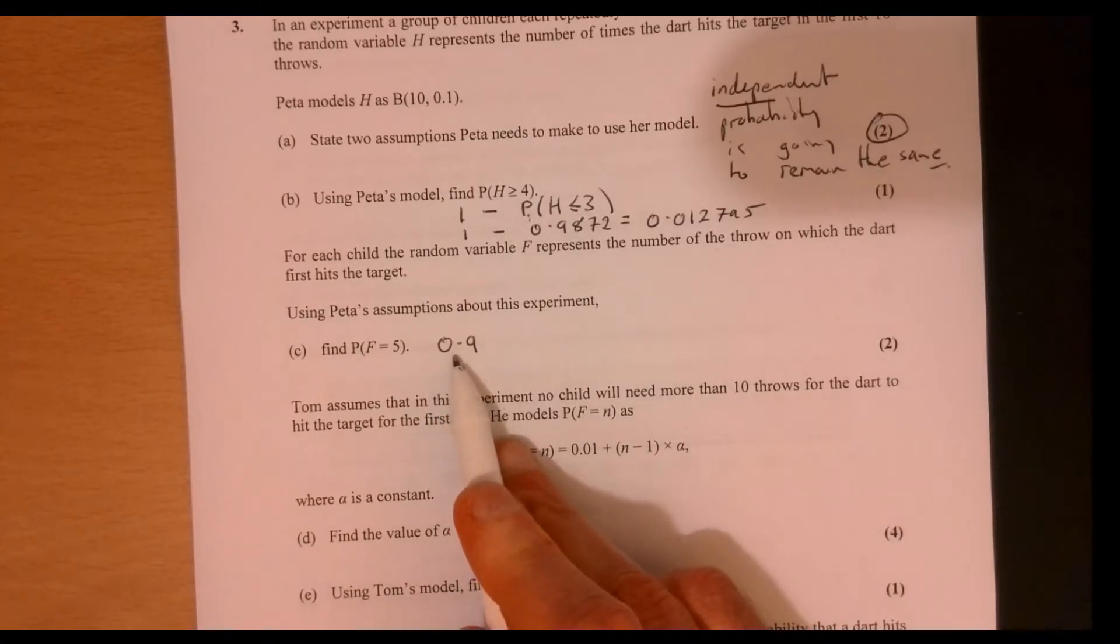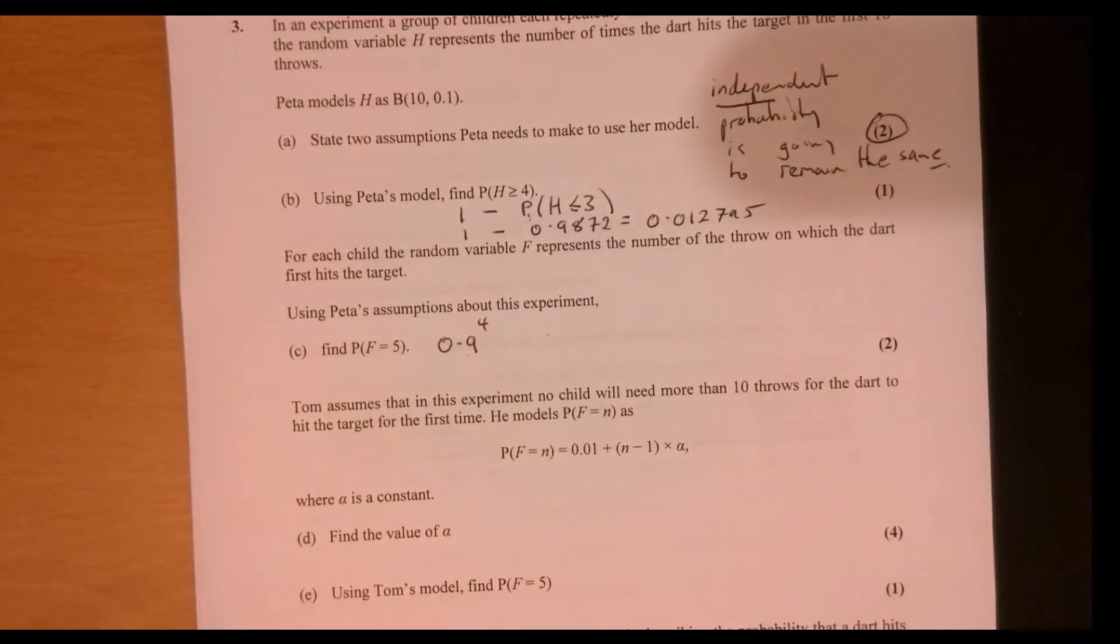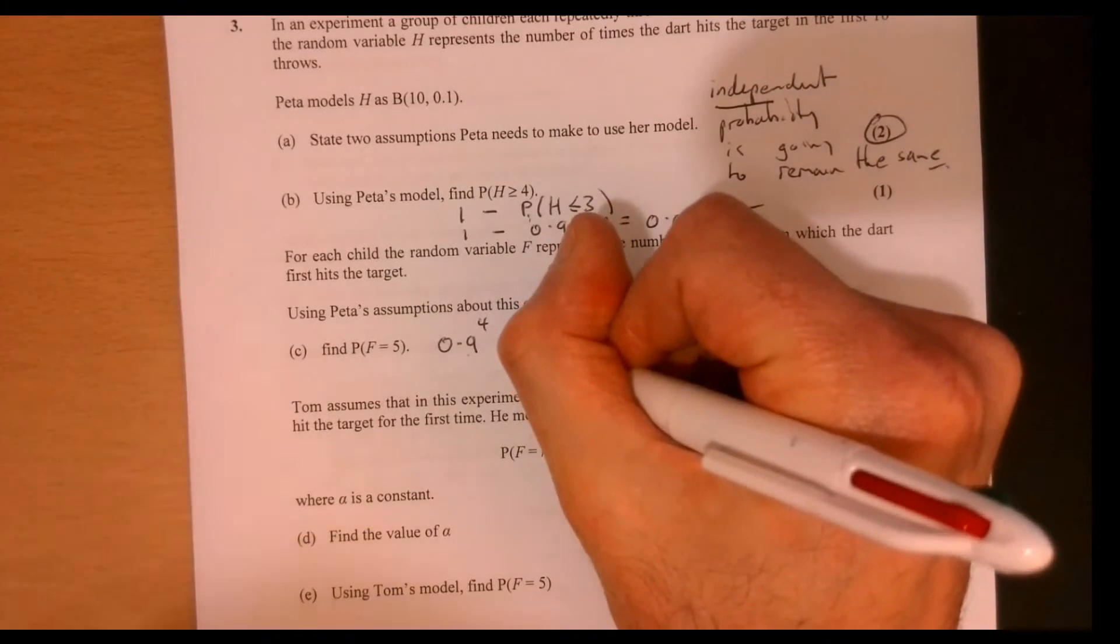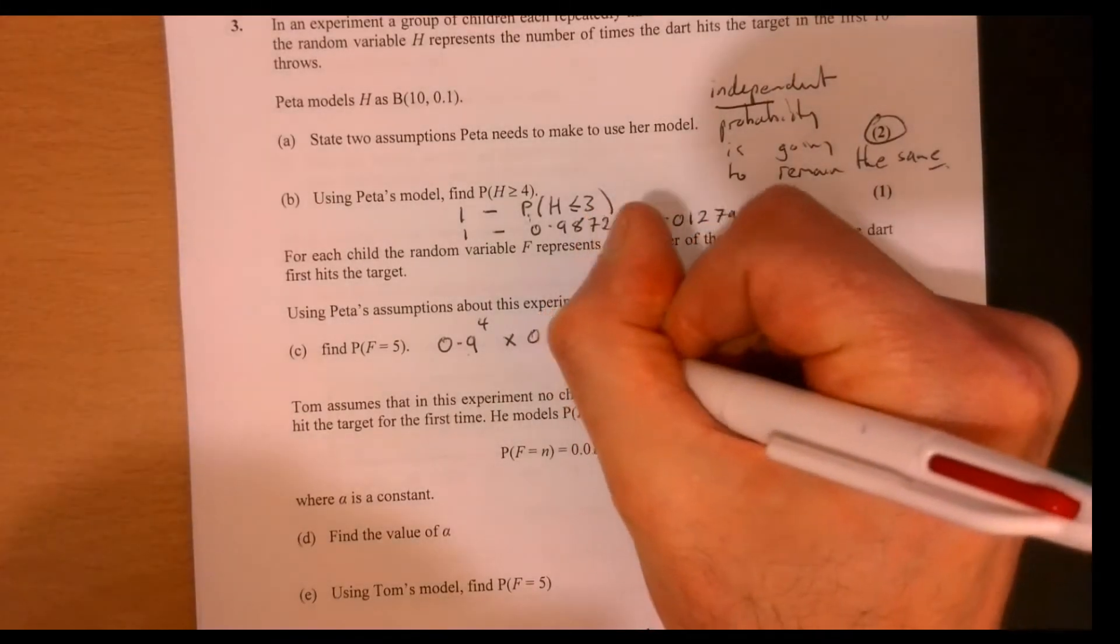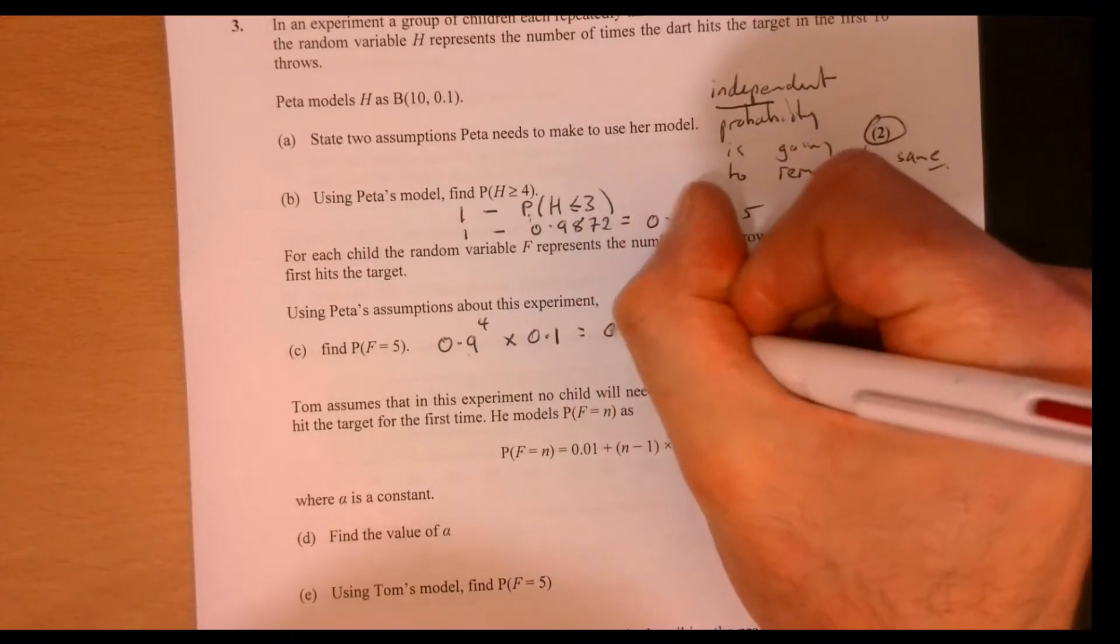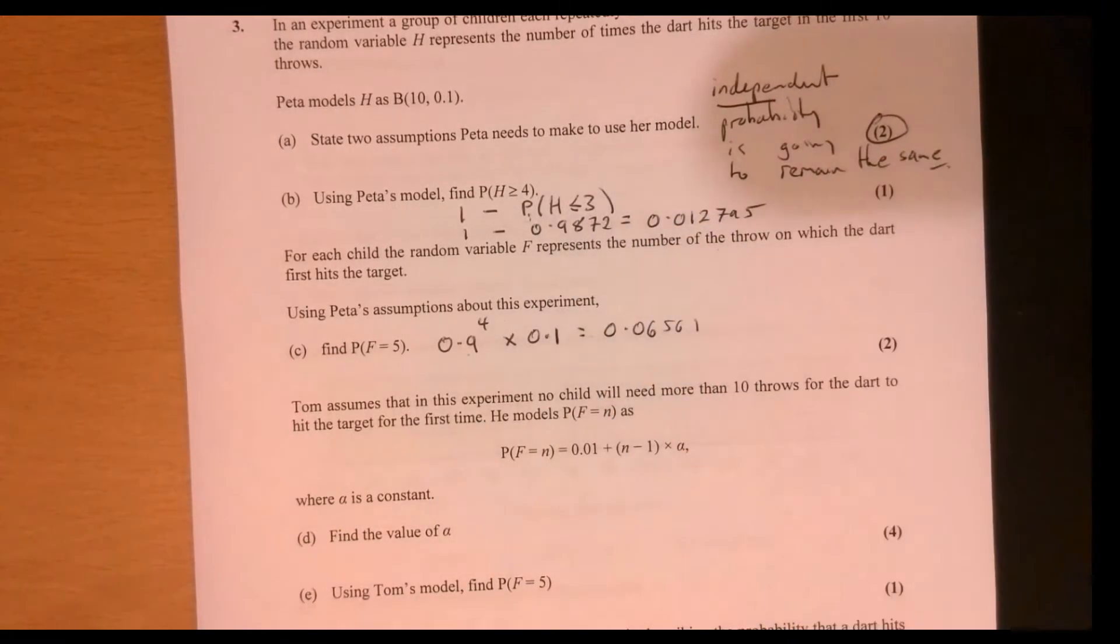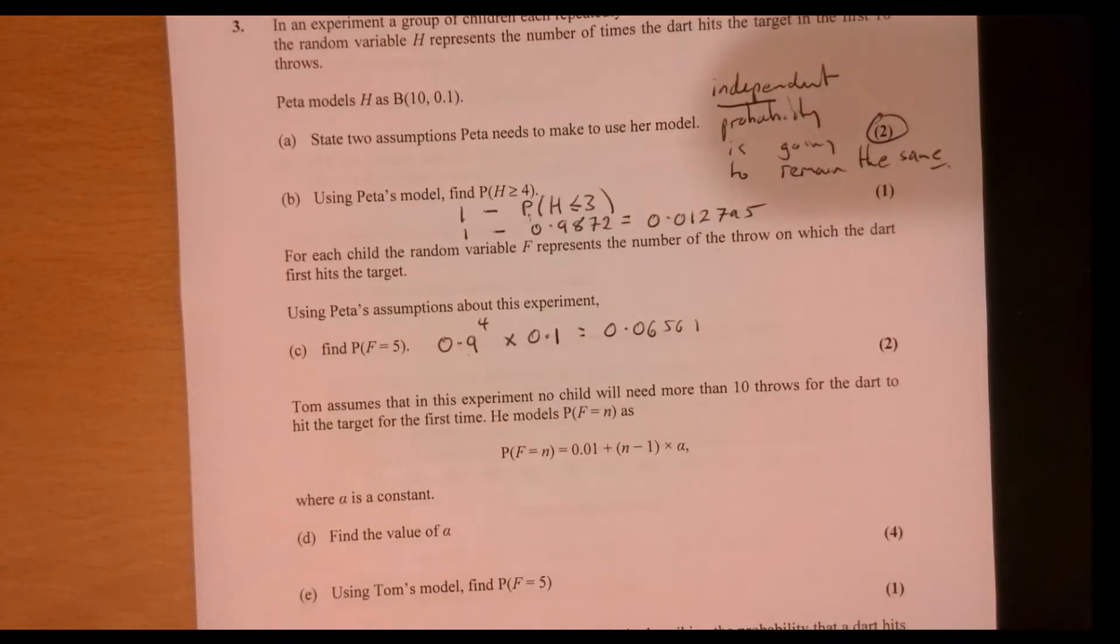So the probability of missing is 0.9 times 0.9 times 0.9 times 0.9. In other words, that's 0.9 to the power of four. And then they hit it on the next go. So you just work that out. So that's going to be 0.06561. Just plug that into your calculator.